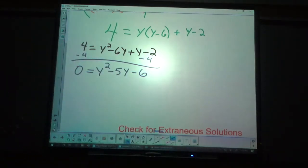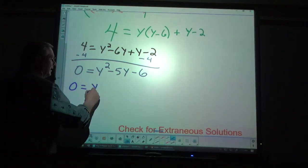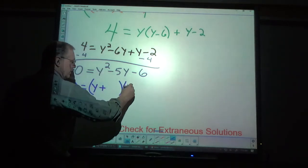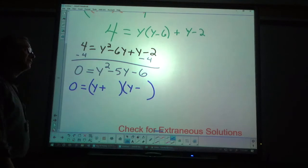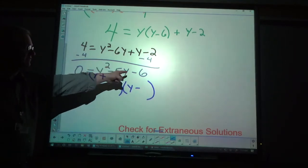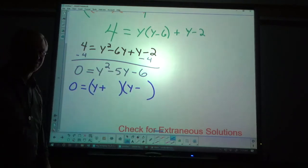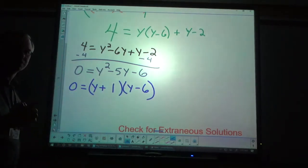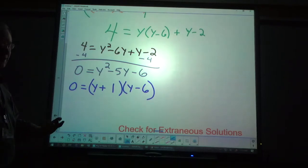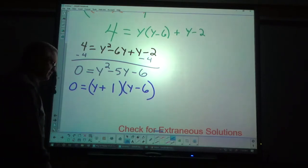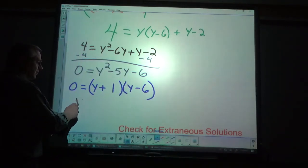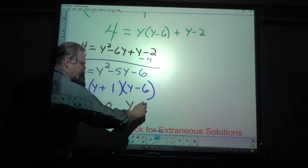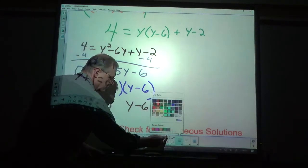Now, I need to factor and solve if I can. If I can't, then I'm going to have to use either complete the square or quadratic formula. y plus and y minus because of my signs. I need a pair of numbers that multiply to negative 6 and differ by negative 5 or add to negative 5. I need a negative 6 and a positive 1. Those would differ by 5, coming up to a negative 5, and multiply to negative 6.